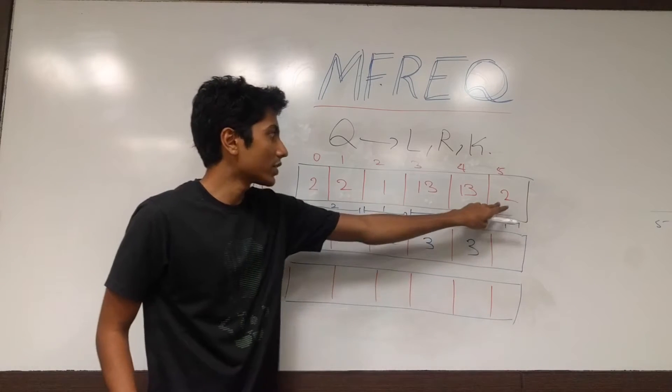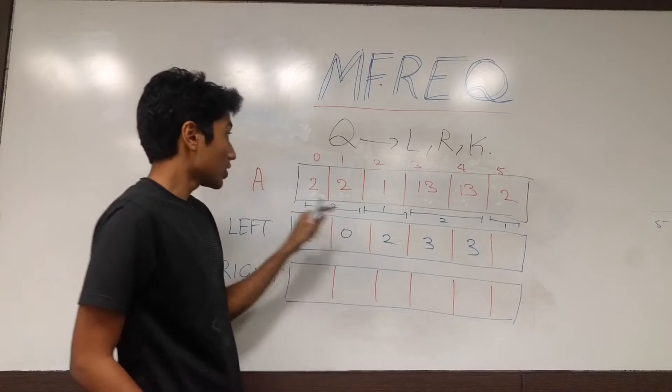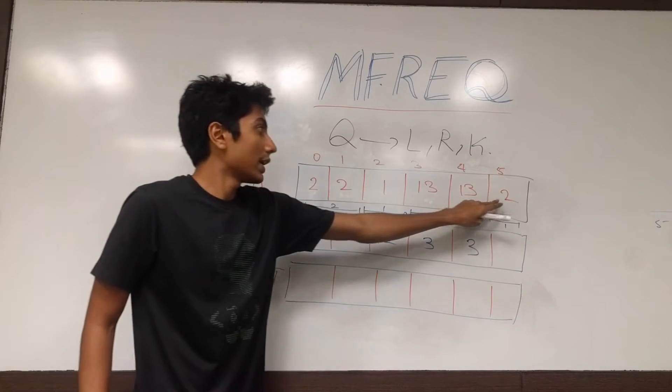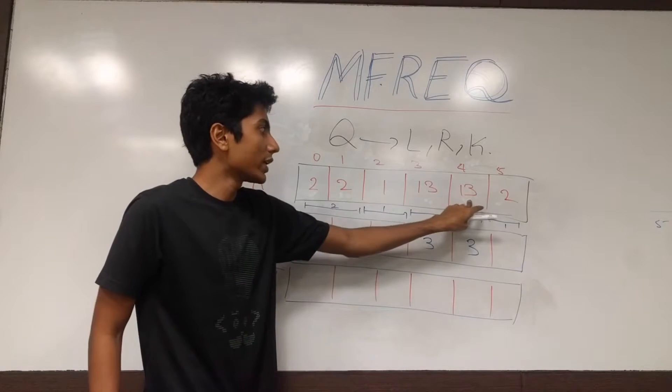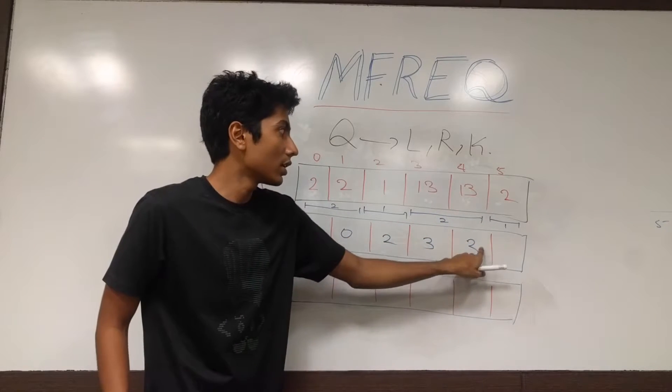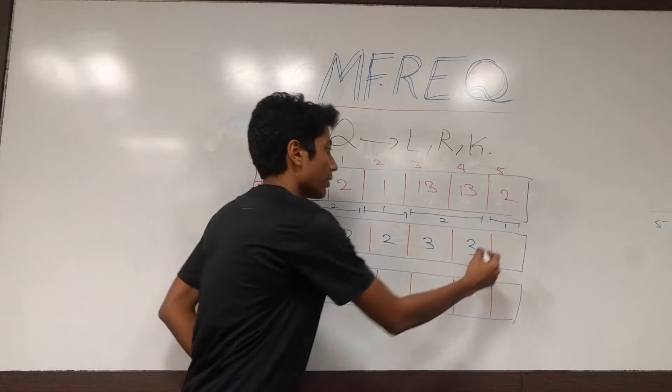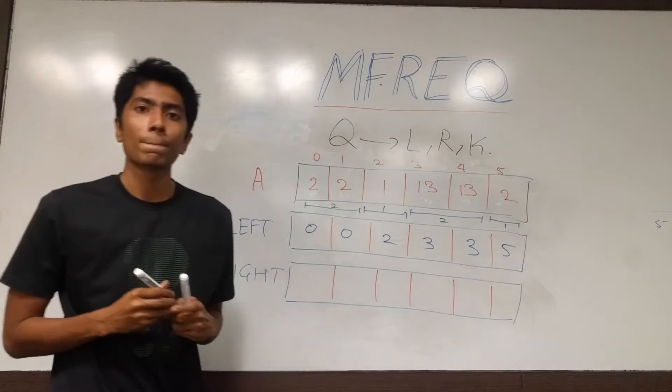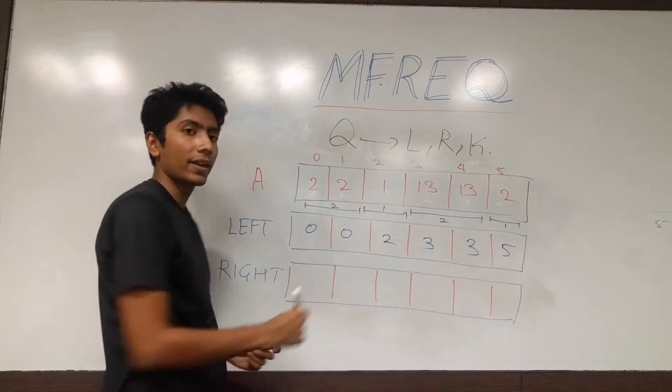2 though, this is an interesting case. The first 2 which occurs is at 0, but it's not contiguous. So we just look at its previous element, which is not equal to it. And we store, not 3, but because it's not equal, that's why 5. So this is how we construct the left array.